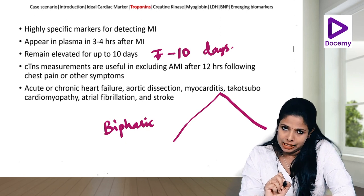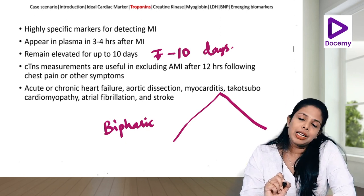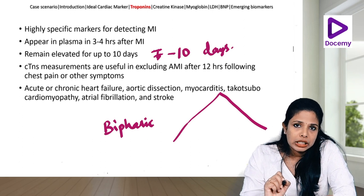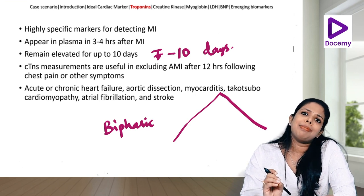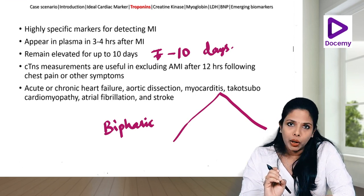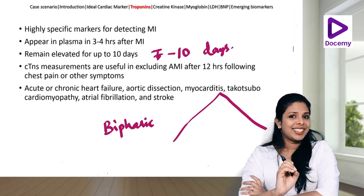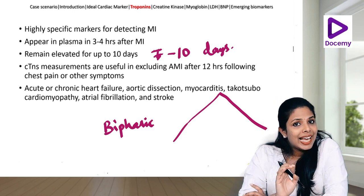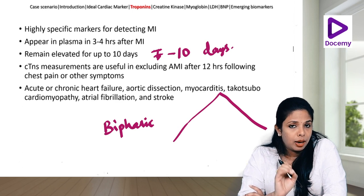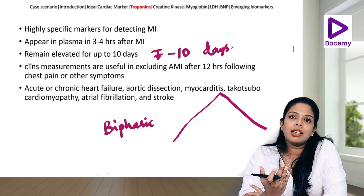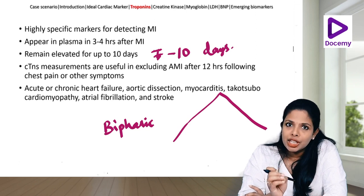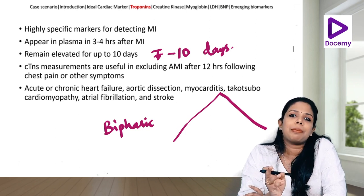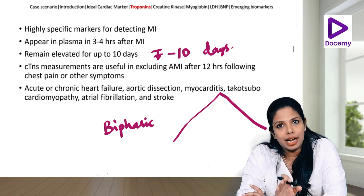Sometimes patients may come within 30 minutes, 1 hour, or 2 hours of the event, and when you check the troponins, they may be normal or at a low normal level. It is highly important: unless a patient has ST-segment elevation MI with a classical ECG following arterial territories, please do not wait for troponins — you can immediately go in for thrombolysis or primary PCI. Troponins are insignificant at that point.